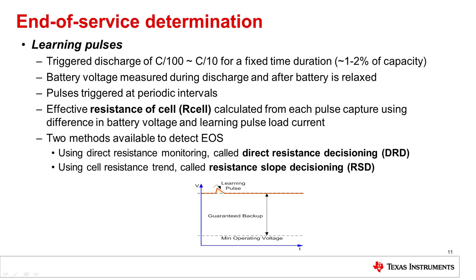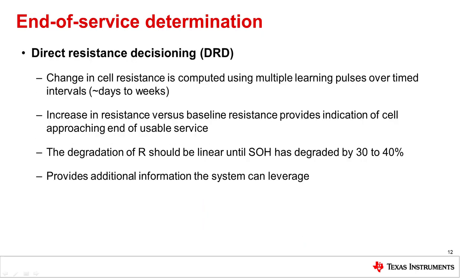There are two methods integrated into the device to trigger an end-of-service based on the collected data. One is called Direct Resistance Decisioning, or DRD, and the other looks at the trend of resistances over time, called Resistance Slope Decisioning, or RSD. The DRD approach looks at each of the R cell values calculated during operation — once a month or once every few weeks — and compares them to an initial R cell value captured right when the device was first put into operation when the cell was fresh and unaged. Based on that comparison, it can decide whether the cell is approaching the end of its life and can provide alerts.